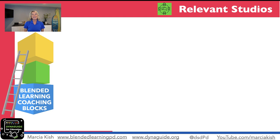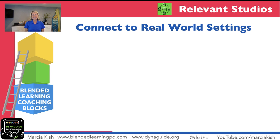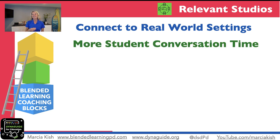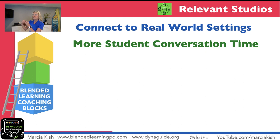Relevant studios. When we're designing our relevant studios, we want to make sure that we are really connecting it to a real-world setting — how do I make sure that if I'm learning this, it's going to make sense in another situation? When you're planning your studios, make sure you have time for students to have conversations. Let them talk through the process — maybe sharing out a poem they wrote, showing how they solved the problem, or talking about predictions within a lab. Anything you can have students talking is going to really connect that content.